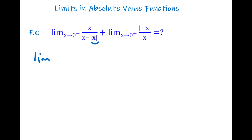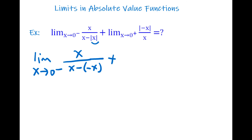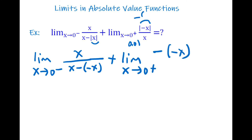For the left-side limit: x / (x − (−x)) = x / (x + x) = x / (2x). For the right-side limit, x is approaching from the right (positive), but there's a negative in front, making the inside of the absolute value negative; put an extra negative: −(−x) / x.